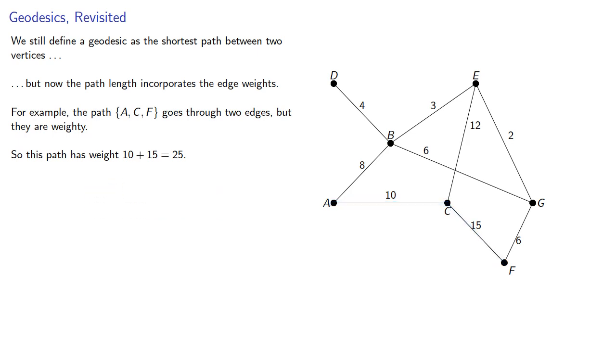On the other hand, if we take a longer path, how about ABGF, the weight along this path is 8 plus 6 plus 6, that's 20. So in some sense, this is a shorter path.